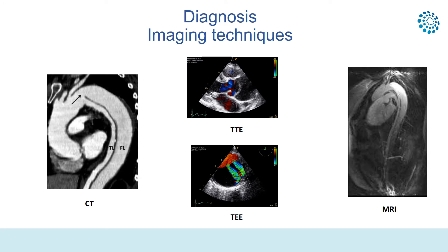Imaging techniques play a pivotal role in the diagnosis of Acute Aortic Syndrome. Computed tomography is the most commonly used imaging modality, owing to its wide availability, accuracy, and large field of view. CT combined with transthoracic echocardiography is the best combination for diagnosis and assessment of complications, allowing important morphologic and dynamic aspects of the disease to be evaluated.